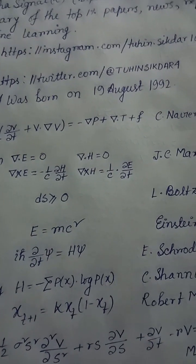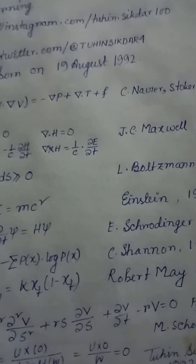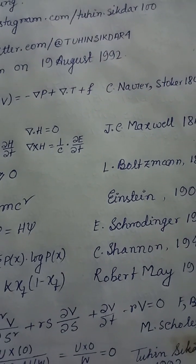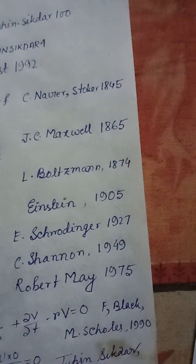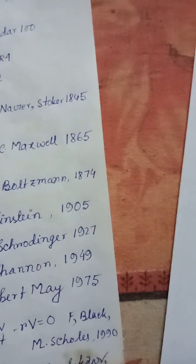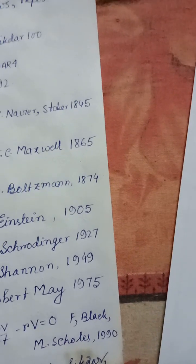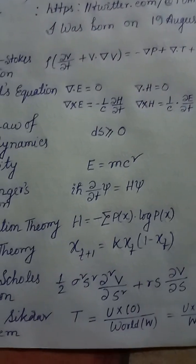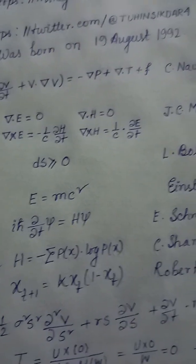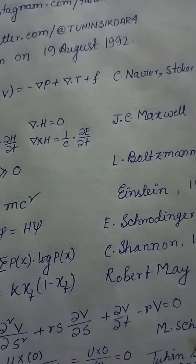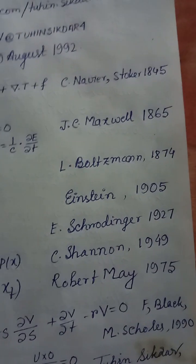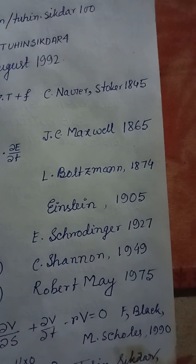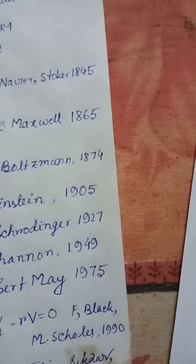Equation 16 — Chaos Theory: x(t+1) = k·x(t)·(1−x(t)). Robert May, 1975. Equation 17 — Black-Scholes equation: (1/2)ρ²s²(∂²V/∂s²) + rs(∂V/∂s) + (∂V/∂t) − rV = 0. Black-Scholes, 1990. Equation 18 — Tuhin Sikdar Theorem: T = U·0 / W; W = U·0 / w = 0. Tuhin Sikdar, 1992.